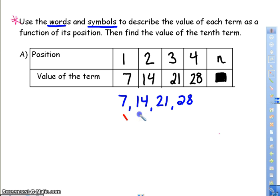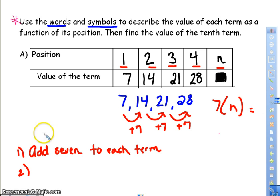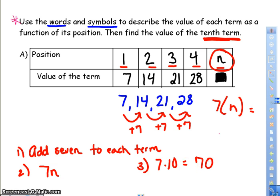So you'll notice in this arithmetic sequence, what I'm doing is I'm adding 7 to each term. In words, I could put, you add 7 to each term. In symbols, I know that I am taking 7, and I'm multiplying it by the position, by n, to get my value of that term. So in symbols, I'm going to write 7n, and I'm using n because that's what I have here. Now, the n is going to represent the position. So if I need to find the value of the 10th term, it's going to be the 10th number, so the 10th position. So I'm going to take 7 times 10, which is 70. So here's my three answers in words, in symbols, and then my 10th term.